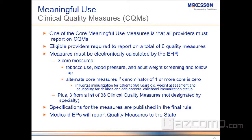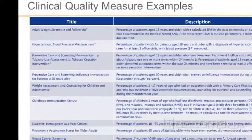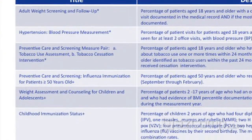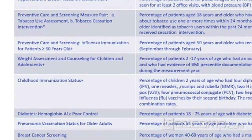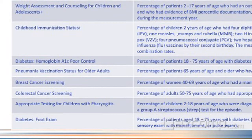The other three measures you choose come from a list of 38 quality measurements. It's very easy to pick three of these. For instance, breast cancer screening is one option — for women between the ages of 40 and 69, it wants to know what percentage have had a mammogram. It's a very simple thing you would have asked anyway. You'll find easily that you can choose three of these that will not disrupt your practice today.